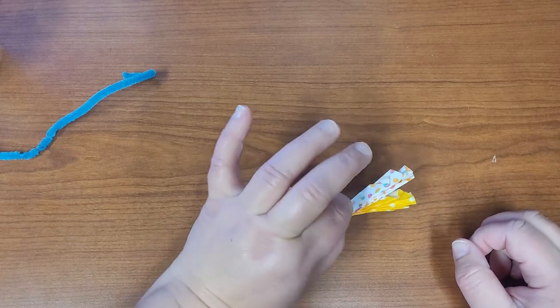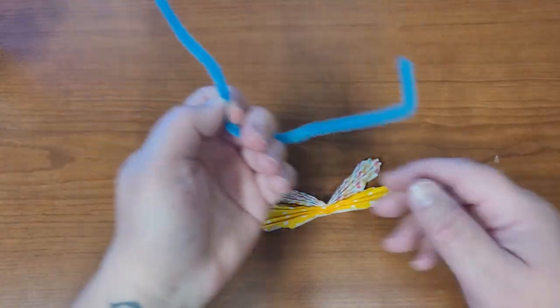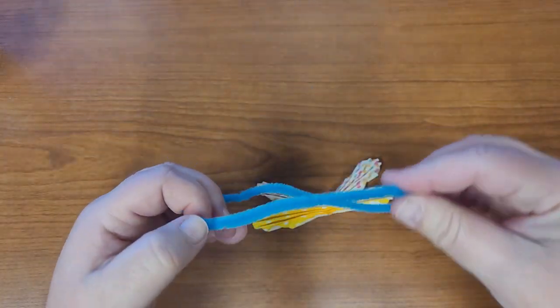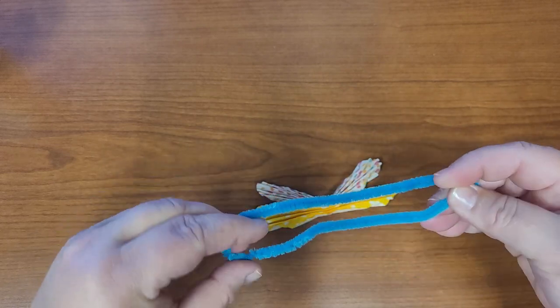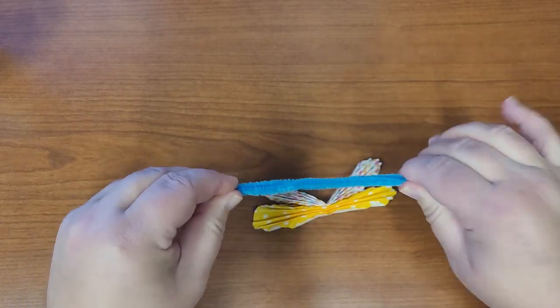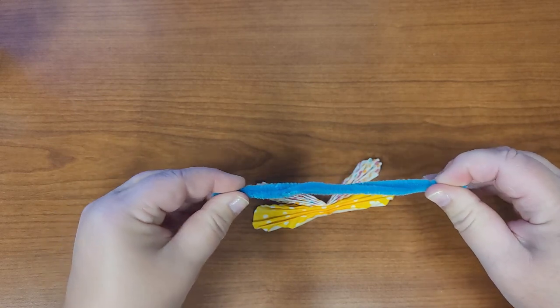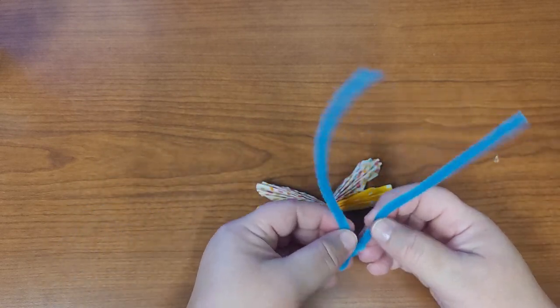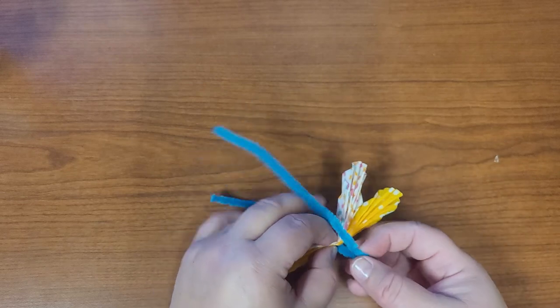Okay, so after you have let that dry you're going to get your pipe cleaner. This is how we're going to make the butterfly's antenna. You're going to fold it in half. And then you're going to twist it around the middle crease of the cake liners.